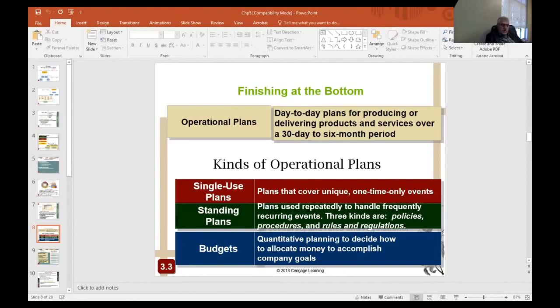The chapter also talks about kinds of operational plans, such as single-use plans, standing plans, and budgets. Single-use plans deal with unique, one-time-only events. Standing plans save managers time because they are created to handle frequently recurring events. There are three kinds of standing plans: policies, procedures, and rules and regulations. Budgets are the third kind of operational plans. Budgeting is quantitative planning because it forces managers to decide how to allocate money to best accomplish company goals.